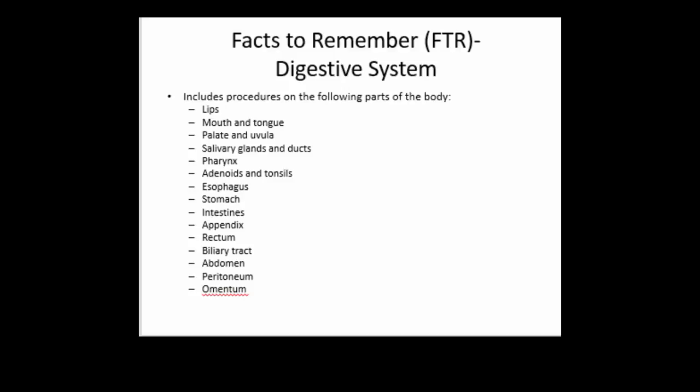Some facts to remember — we use the FTR acronym for facts to remember. The parts of the body covered under the digestive system are listed here and would also be in red font within the digestive system section, and you'd see them on the table of contents. What I think is particularly interesting: when we get to the abdomen, the laparoscopic aspiration of an ovarian cyst, instead of thinking of it as female system, it falls in the CPT book under the abdomen.